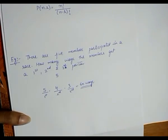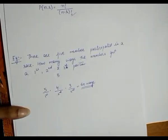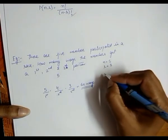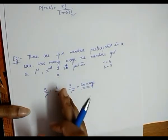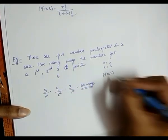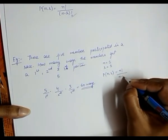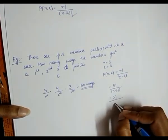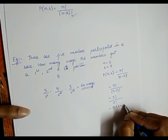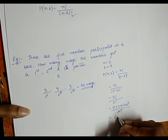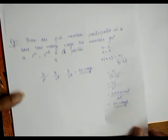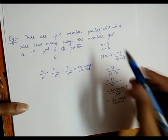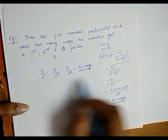We can also solve this using the formula. The total number of members is n = 5, and the positions are r = 3. Since order matters, we apply the permutation formula: P(5, 3) = 5! / (5 - 3)! = 5! / 2! = (5 × 4 × 3 × 2!) / 2! = 5 × 4 × 3 = 60 ways. You can apply the formula or solve directly — both give the same answer.